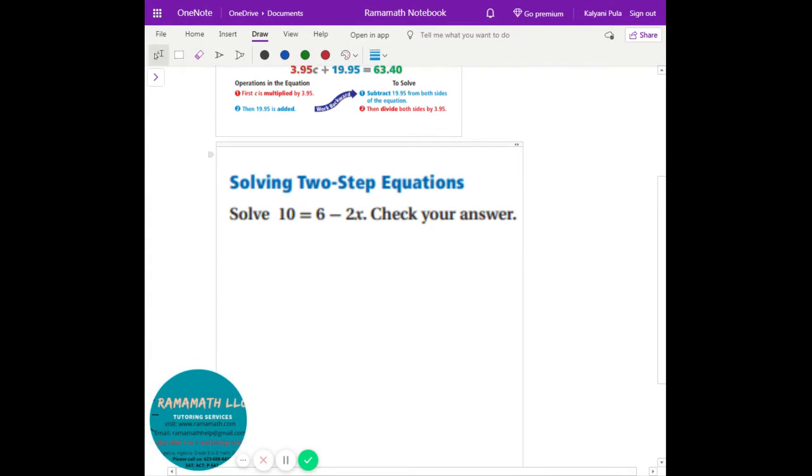When you do the work on the two step equations you always first keep an eye on where is my variable. So always look for the variable. So I see the variable right here. The x is right here. That's what you want to isolate. That's what you want to find the value. So next to the x you have multiplied by 2. And then also you have a 6 up here. So first of all you got to take care of the 6.